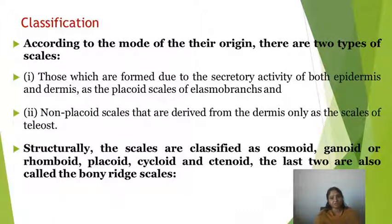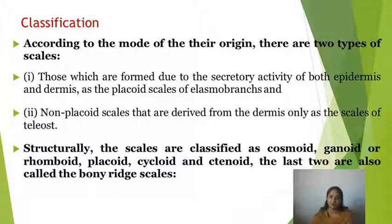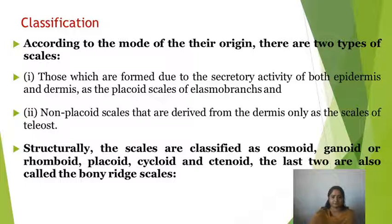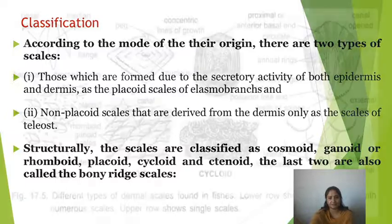We classify scales into Placoid scales and Non-Placoid scales. In Elasmobranch fishes and Cartilaginous fishes, you get Placoid scales. Placoid scales are the characteristic features of Cartilaginous fishes. In the remaining fishes — Primitive fishes and Advanced Bony fishes — Non-Placoid scales are present, including Cosmoid scales, Ganoid scales, Rhomboid scales, Cycloid scales, and Ctenoid scales.